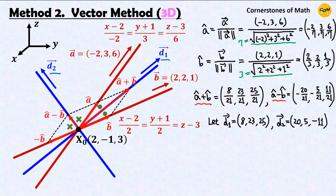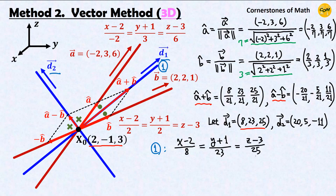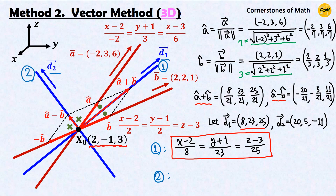Using these direction vectors, we can find the equations of the two angle bisectors. The first bisector passes through (2, −1, 3) with direction vector (8, 23, 25), giving the equation: (x − 2)/8 = (y + 1)/23 = (z − 3)/25. The second bisector passes through (2, −1, 3) with direction vector (20, 5, −11), giving: (x − 2)/20 = (y + 1)/5 = (z − 3)/(−11).